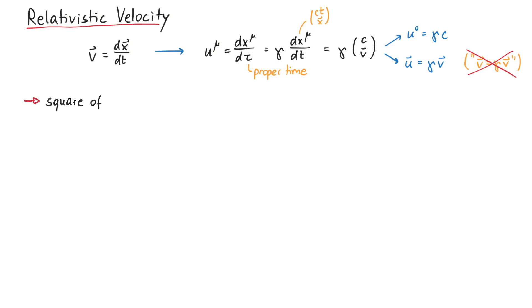Let us now look at the length of this 4 vector u mu. In order to square a 4 vector, we contract an upper index with a lower index. The 4 vector with a lower index is actually given by the metric times a 4 vector with an upper index.